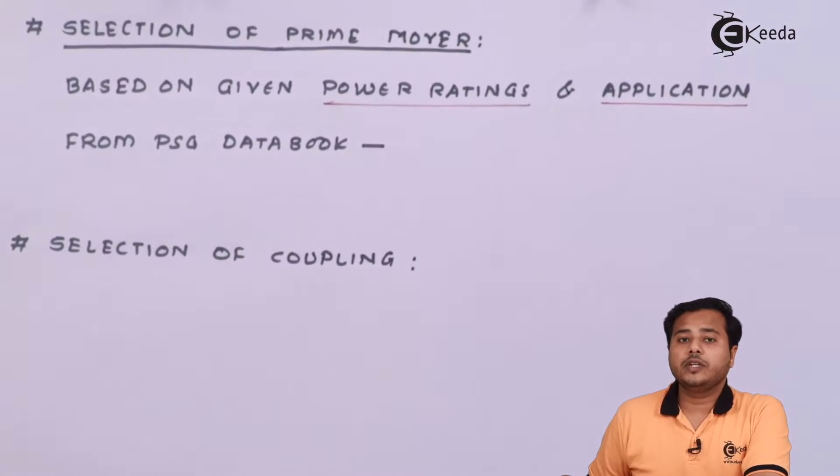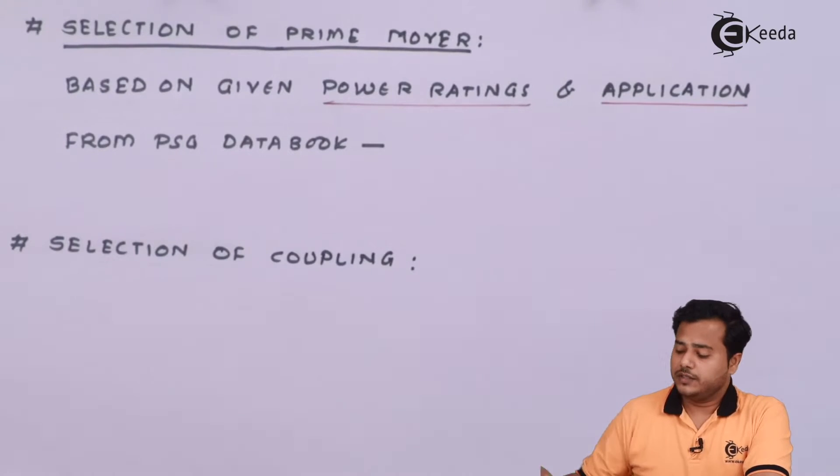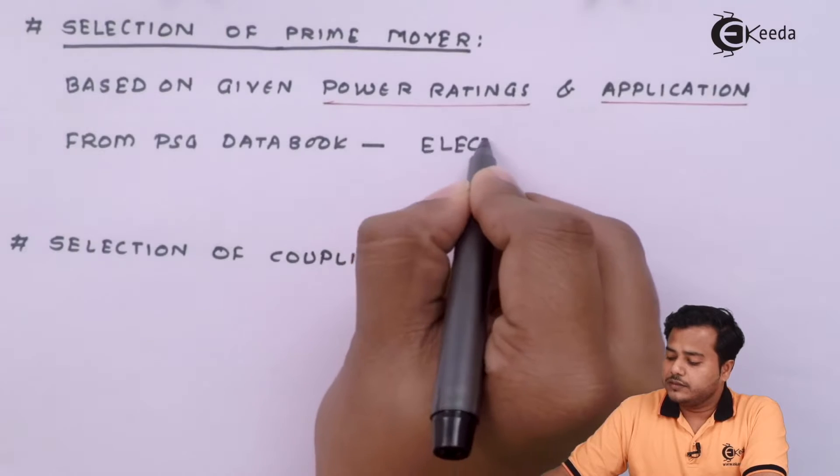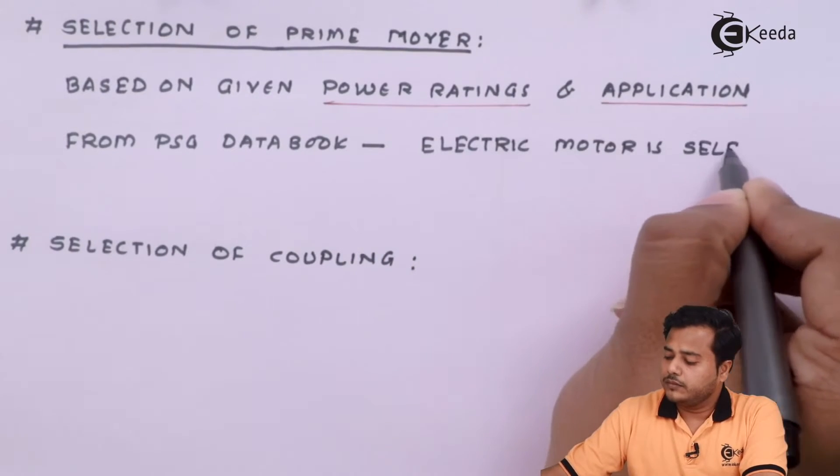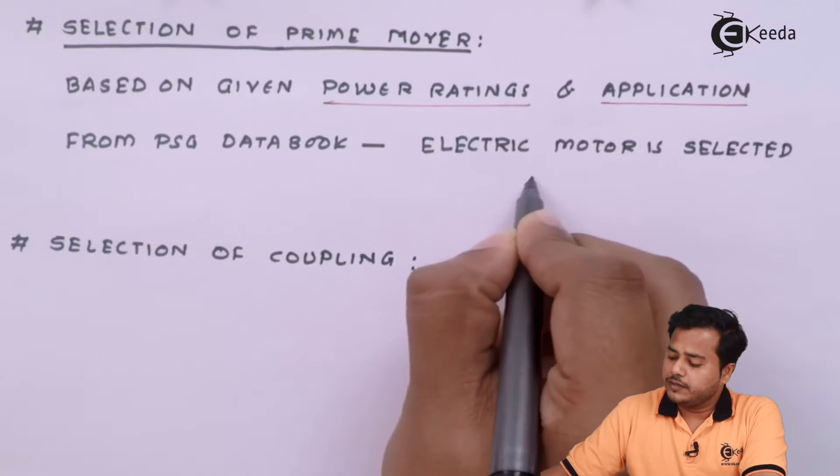An electrical motor is the most suitable application for this. Because the load which is actually given is not that big and the RPM expected are not also very large. And that's why an electric motor is suitable for this as prime mover.